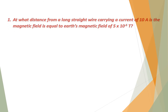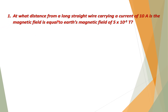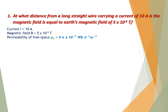Numerical problems. Question number 1: At what distance from a long straight wire carrying a current of 10 ampere is the magnetic field equal to Earth's magnetic field of 5×10⁻⁵ tesla? Given: current I = 10 A, magnetic field B = 5×10⁻⁵ T, and permeability of free space μ₀ = 4π×10⁻⁷ Wb/A·m.